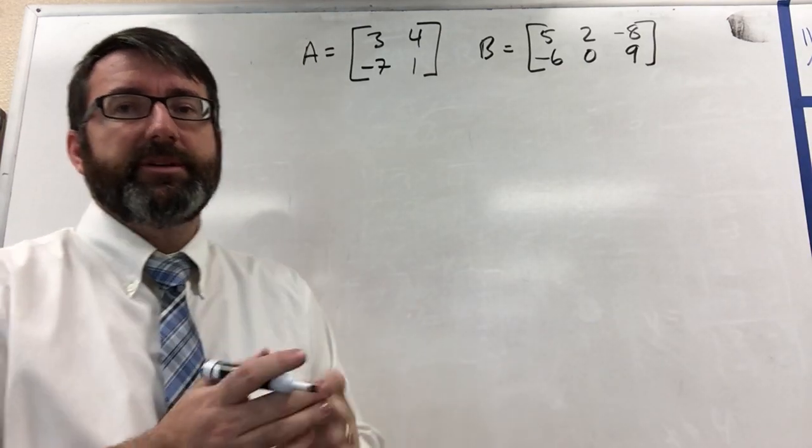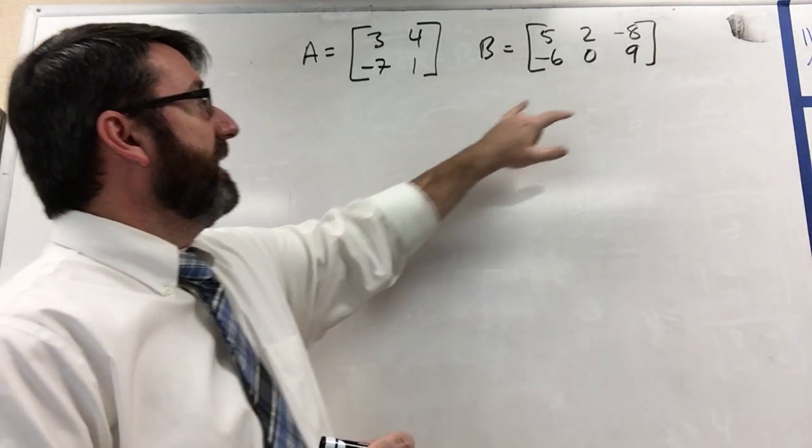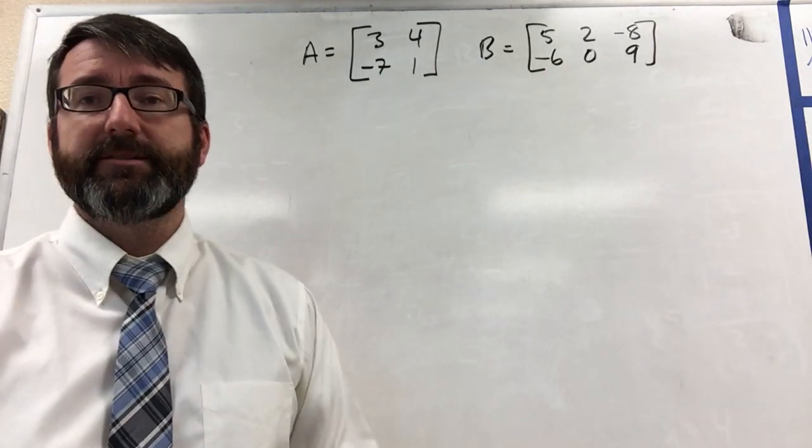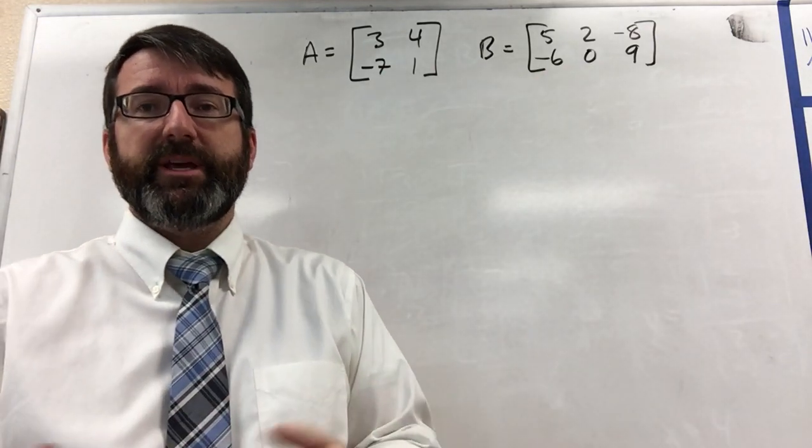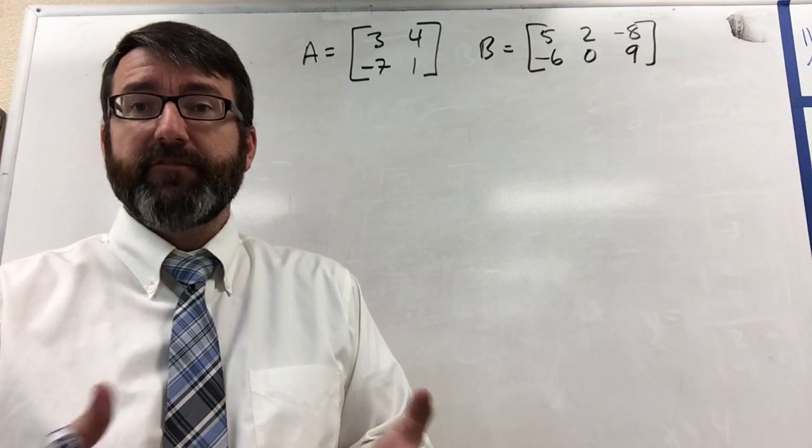All right, for number seven, we're given two matrices, matrix A and matrix B, and we're asked to find A times B and B times A, if possible.